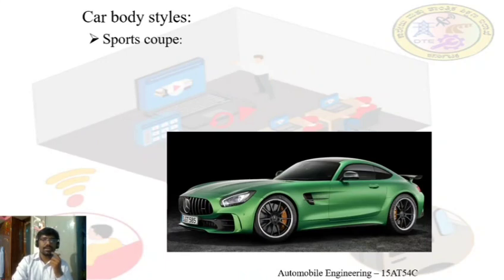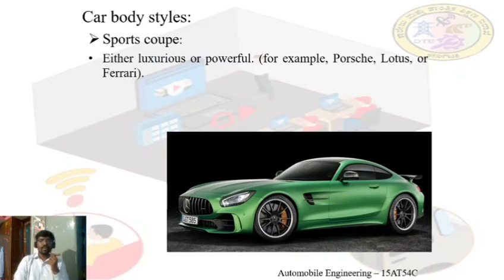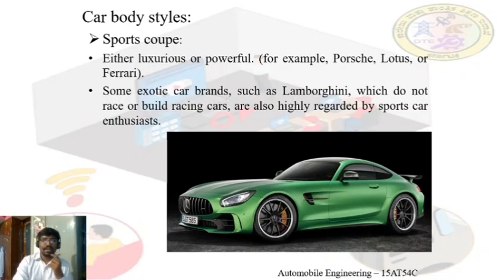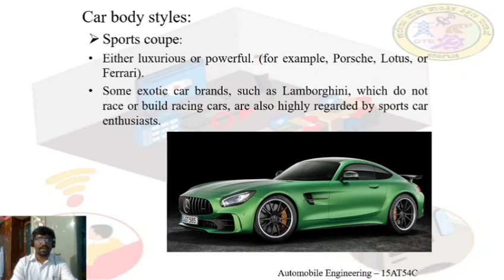The next type of car body is the sports coupe. As the name indicates, it has a coupe design with a sporty look — the diagram shows a two-door coupe. It is given a luxurious and powerful engine, a combination of luxury and power. Some examples include Lotus and Ferrari. Exotic car brands such as Lamborghini also fall under sports coupe because whatever cars they build have more speed, and that is why they come under sports coupe.